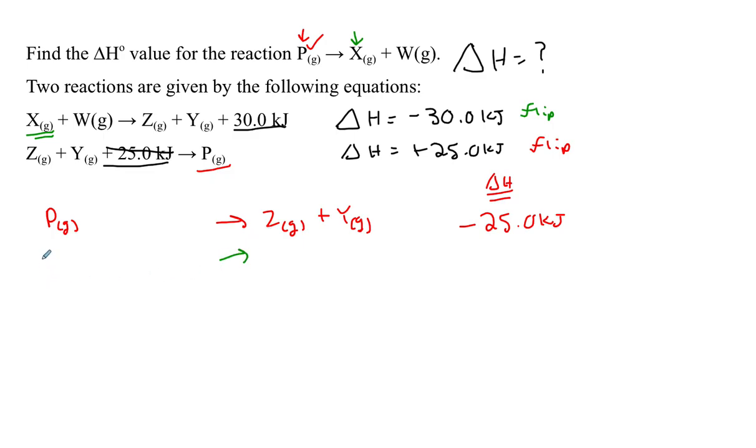The first equation is going to have Z gas plus Y gas reacting to produce X gas and W gas. The equation has been flipped, so I also have to flip the change in enthalpy. This is now going to be positive 30.0 kilojoules. That got X on the product side, and it also gave me W on the product side.